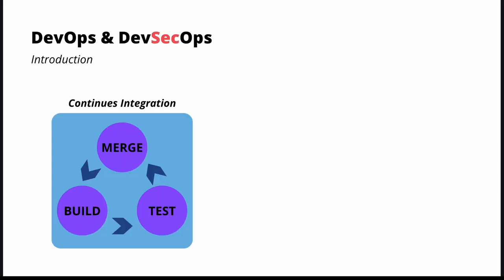So what is DevSecOps about? It is about extending the DevOps approach with additional activities. If you think about DevOps, you may think of a continuous integration cycle where you merge your code to a central repository, then it gets built and tested. Those cycles happen every time there is a new change by a developer implementing some features or bug fixing.